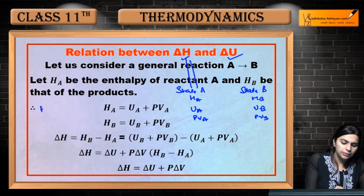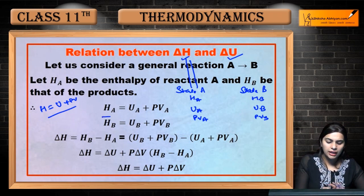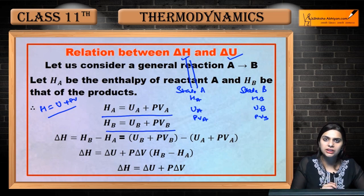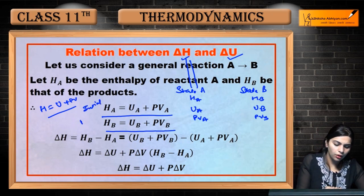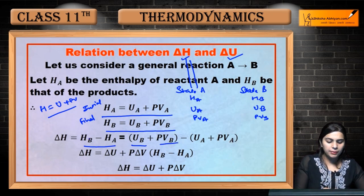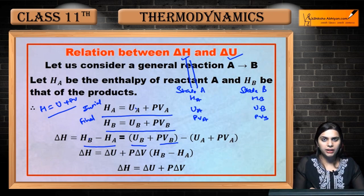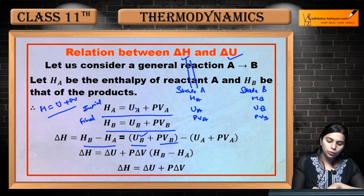Because we are studying at constant pressure, the value of pressure will be the same, so only volume will change. Now let's consider our relation: H = U + PV. For two states: HA = UA + PVA, and HB = UB + PVB. Now we have to calculate the change — final minus initial, so HB minus HA. Substituting: HB = UB + PVB and HA = UA + PVA.